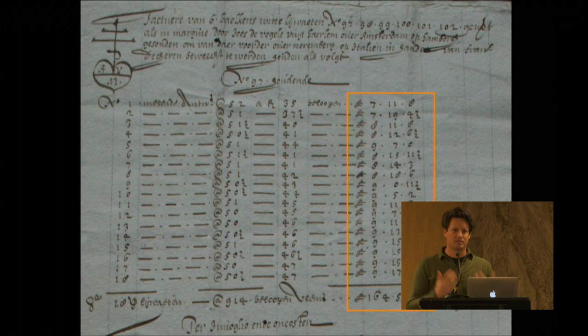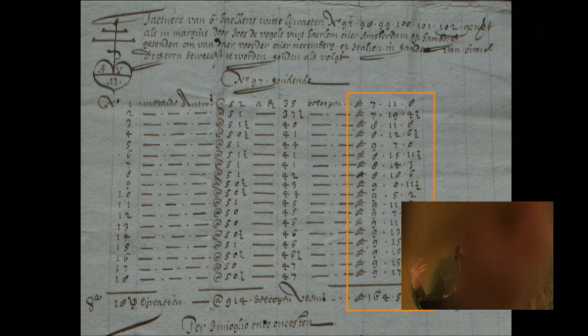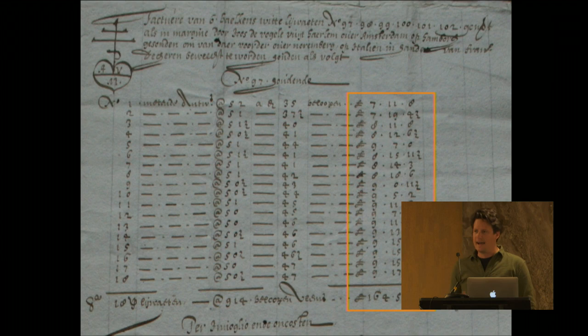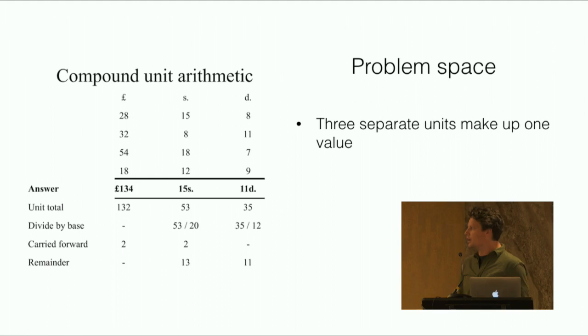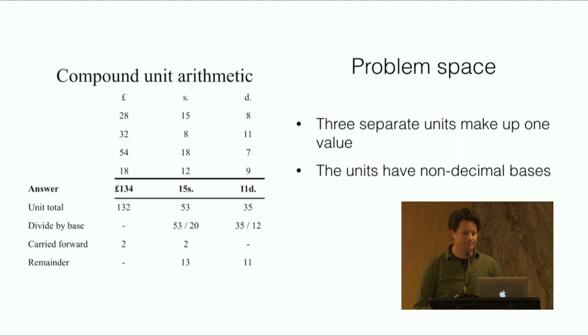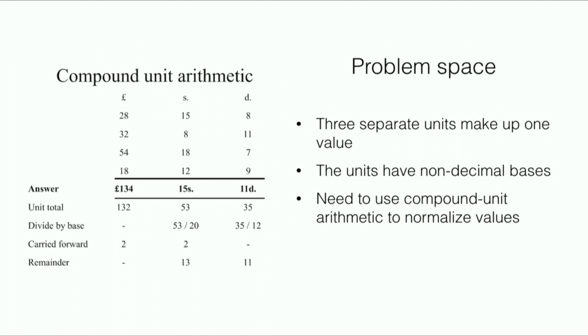These are currencies like Flemish pounds - basically currencies in pounds, shillings and pence. This is a problem because we don't learn how to do non-decimal arithmetic anymore and computers are obviously based on decimal arithmetic. You can't just plug these numbers into a computer and do an analysis on them. What exactly is the problem space? With non-decimal currencies you have to do compound unit arithmetic - you have to add up the separate columns and then divide by the base of that column to get your answer.